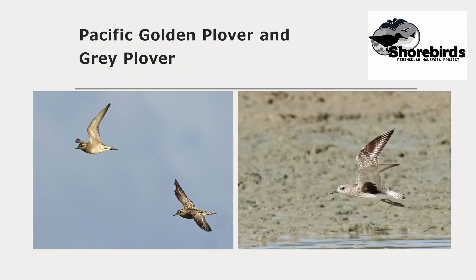Here's an example: on the left Pacific Golden Plover and on the right Grey Plover. These species differ quite subtly when on the ground but very obviously when in flight. From above on the right you can see the Grey Plover has a broad white outer wing bar caused by white primary bases, and a white rump and tail base. On the left the Pacific Golden Plover has a much less obvious wing bar, and the rump is the same colour as the back and the tail. From below, Pacific Golden Plovers have a fairly uniform grey underwing, whereas Grey Plover has a largely white underwing and contrasting black axillaries — or armpits as they're often called.